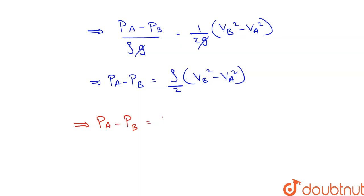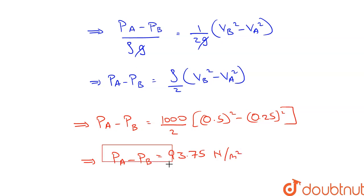The density of water is 1000 kg per meter cube divided by 2 into 0.5 square minus 0.25 square. So upon calculation, we get the value of PA minus PB is equal to 93.75 Newton per meter square. This is the answer to the C part.